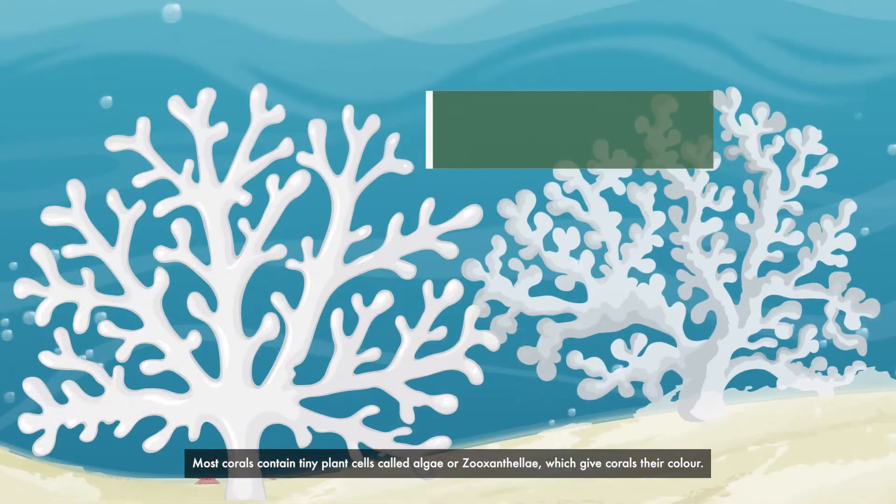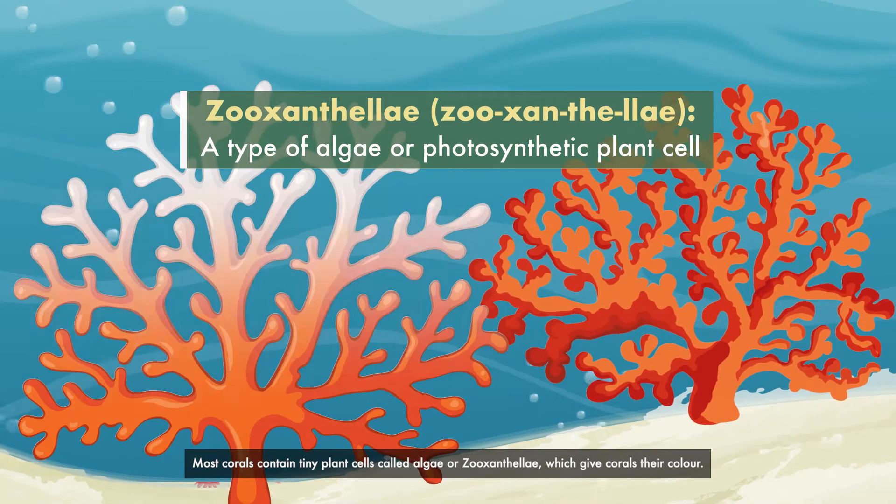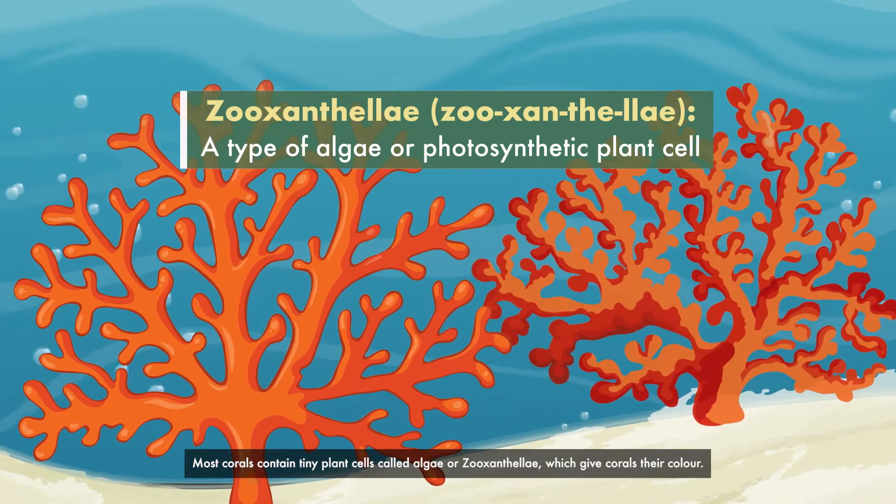Most corals contain tiny plant cells called algae or zooxanthellae, which give corals their color.